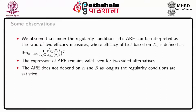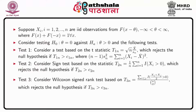Now we get some examples. Suppose X_i for i from 1 to n are iid observations from f(x minus theta), where theta is the location parameter and f(x) plus f(minus x) equals 1, meaning the distribution function is symmetric about 0 when theta equals 0. Consider testing theta equals 0 against the alternative theta greater than 0.